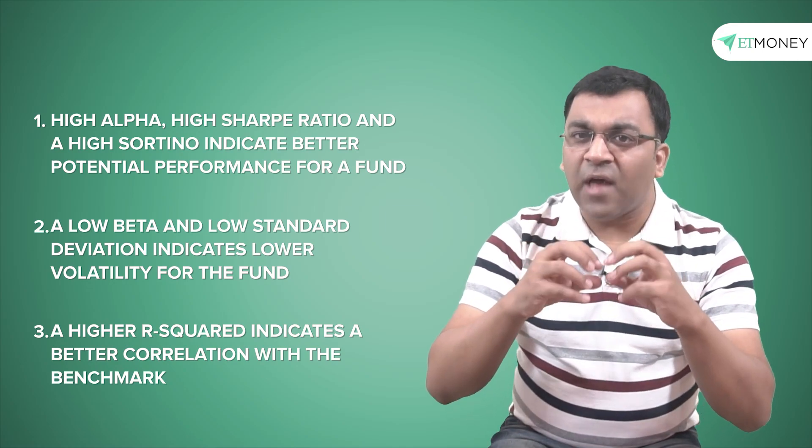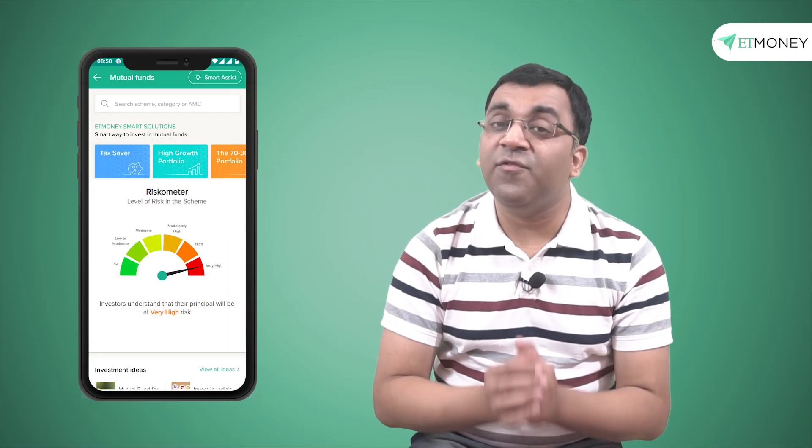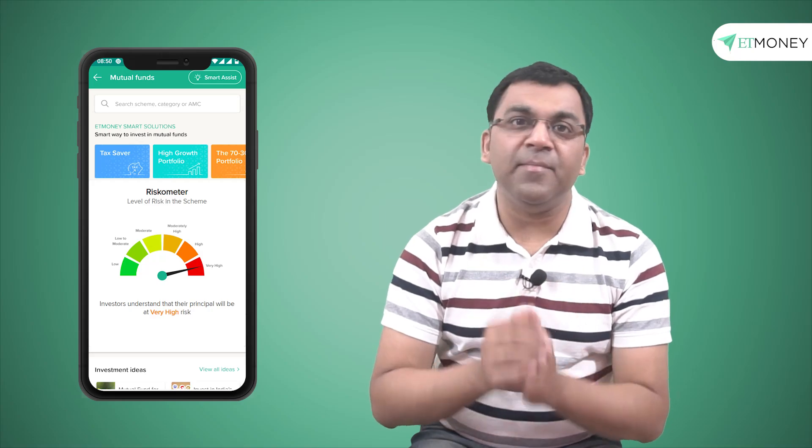So that's a very thumb rule-ish way in which you can use the six measures of risk that we have studied today in this video. These risk measurement tools are rather important as it helps investors better understand their funds and creates a system of checks and balances in the selection of funds which otherwise would have been based on historical performance. In addition to these measurement tools, investors can also reference the riskometer which is available for all schemes on the ET Money app.